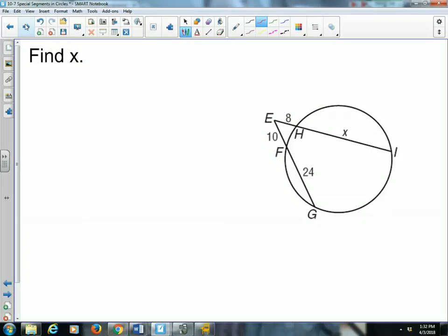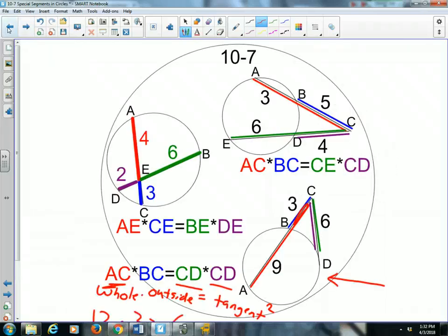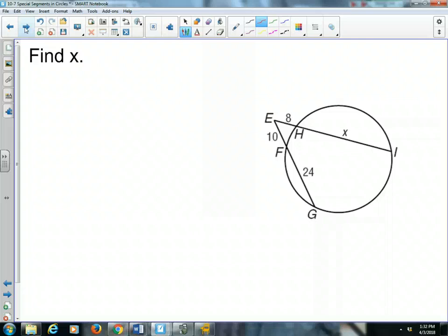So here we have two secants. So when we have two secants, the property that we're using here is the whole secant times just the outside part equals the whole secant times just the outside part. So the whole secant from E to I is x plus 8, right? That would be the distance of the whole secant E-I times just the outside part, so the outside of the secant is 8. That equals the whole secant times just the outside part. The whole secant is 34 units times just the outside, which is 10.